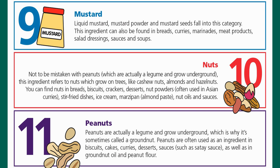(8) Molluscs — mussels, land snails, squid, and whelks — commonly found in oyster sauce and fish stews. (9) Mustard — liquid mustard, mustard powder, mustard seeds — found in bread, curries, marinades, meat products, salad dressings, sauces, and soups. (10) Nuts — tree nuts such as cashews, almonds, and hazelnuts — found in breads, biscuits, crackers, desserts, nut powders used in Asian curries, stir-fried dishes, ice cream, marzipan, and nut oils.